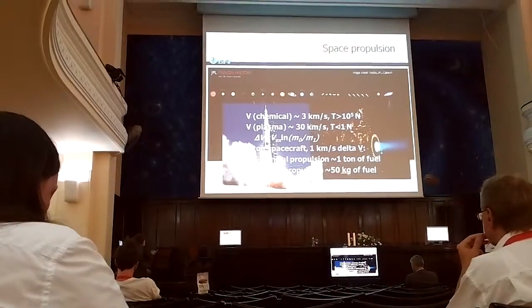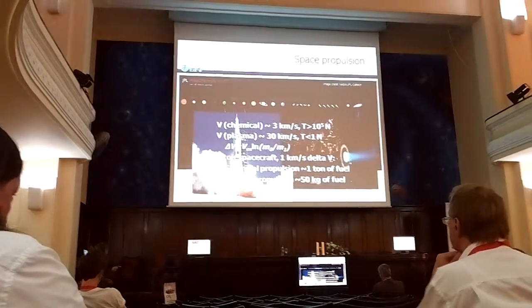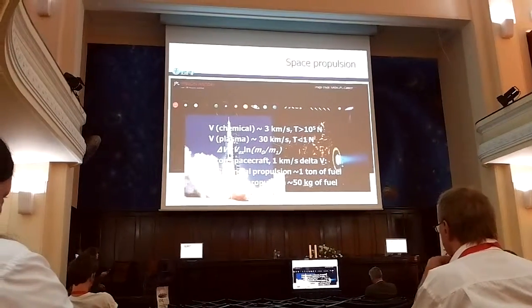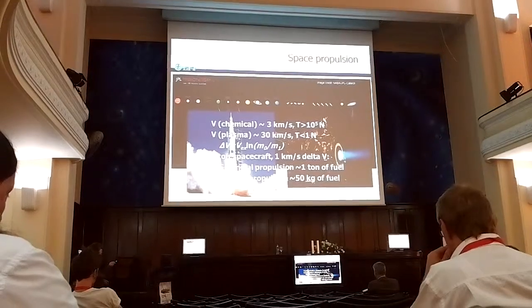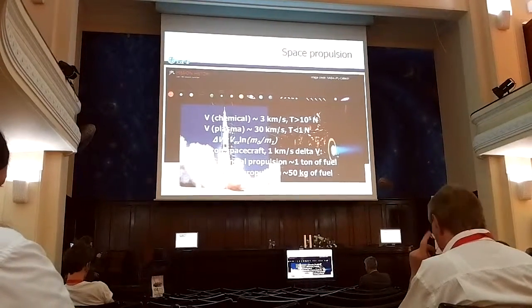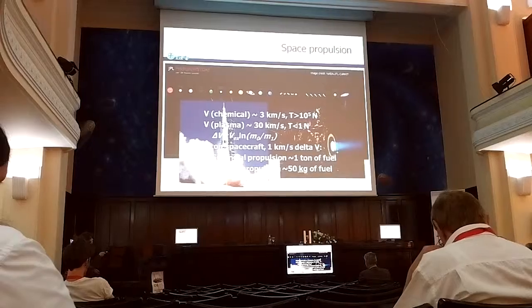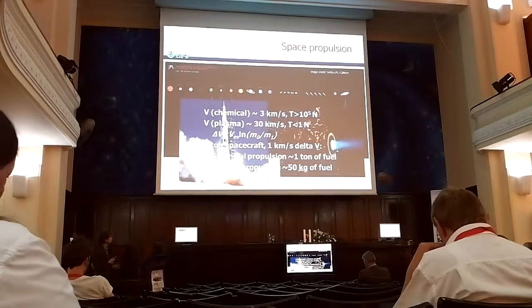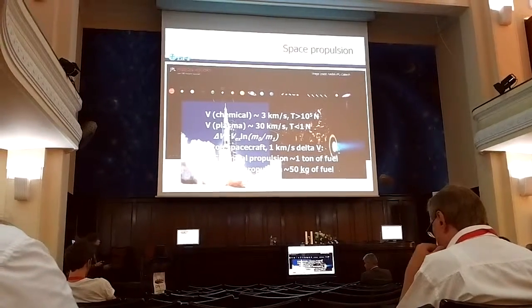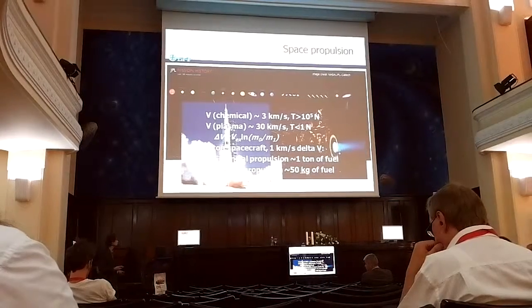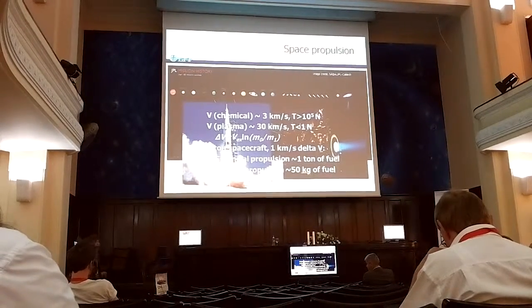And for example, we have two ton spacecraft, one kilometer per second delta V. And for chemical propulsion, we need, using just this equation, we need to spend one ton of fuel, while if we use electric propulsion, we need to spend only 50 kilo of fuel. And it's a huge difference. And in space, it's quite important, I should say.